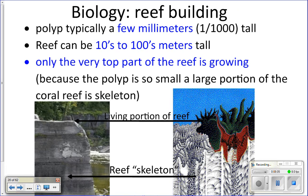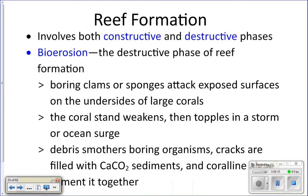So how do these tiny animals that only live on the very surface form a gigantic reef? There are two phases to reef formation: a constructive phase and a destructive phase. The constructive phase is where a little coral larva settles down and starts growing into a new coral colony. The destructive phase is called bioerosion.